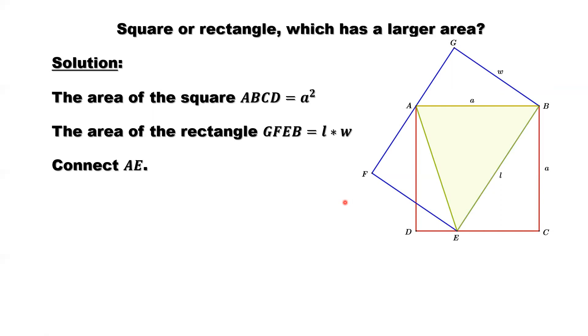Connecting from point A to point E. This is the important key part. We have a triangle ABE here. How to calculate the area of this triangle? Based on the following formula: one half times the base, then times the height.